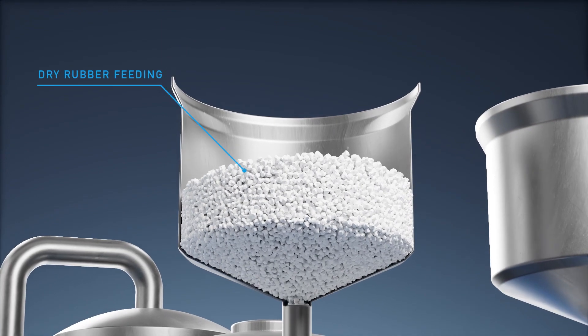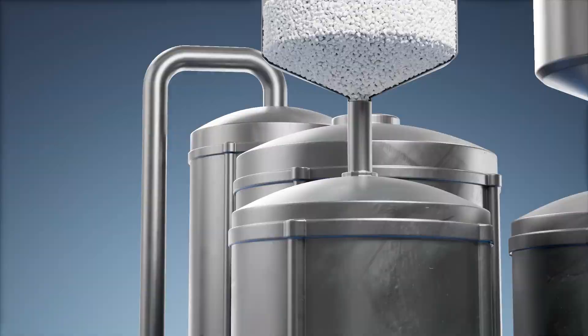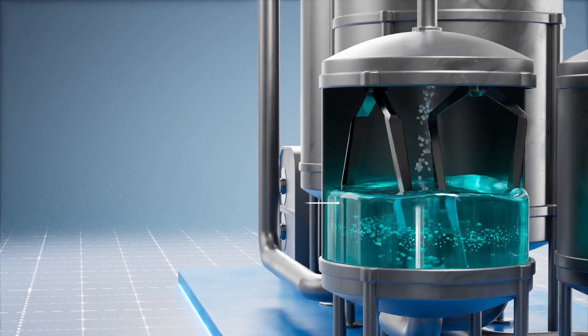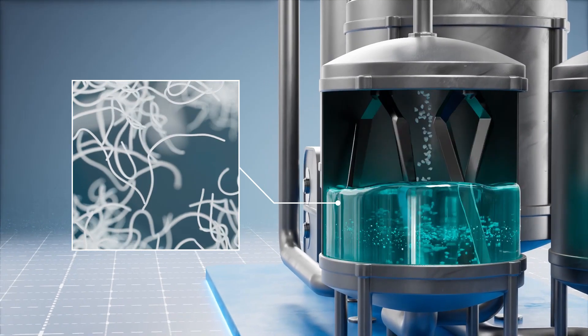First, crust rubbers enter a preparation tank. A solvent then liquefies the crust rubbers to create a uniform solution.